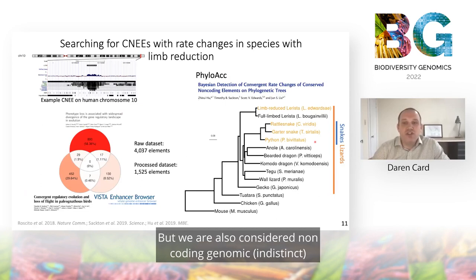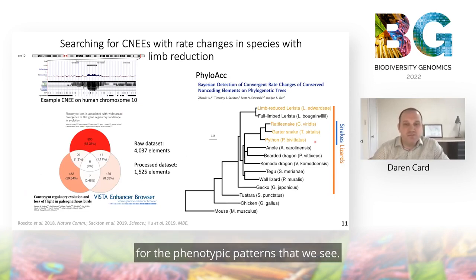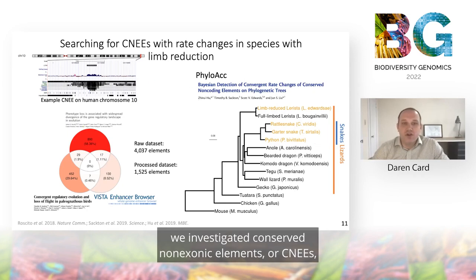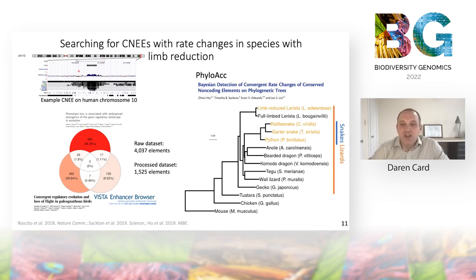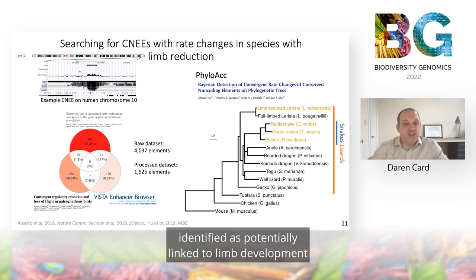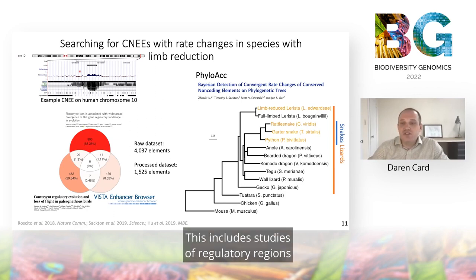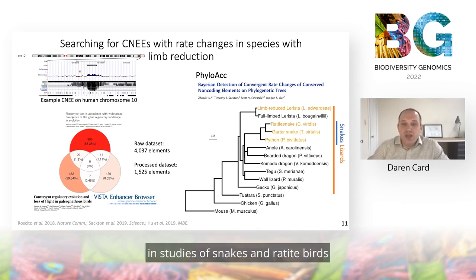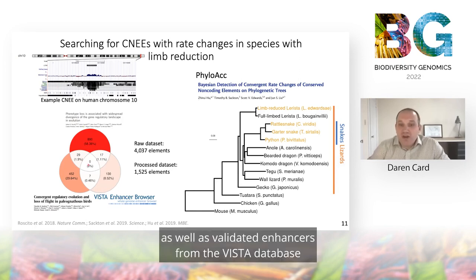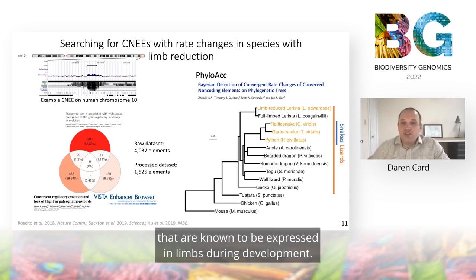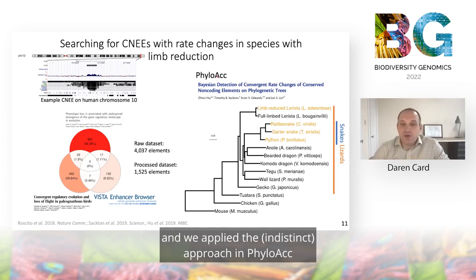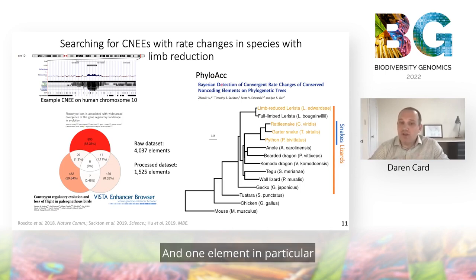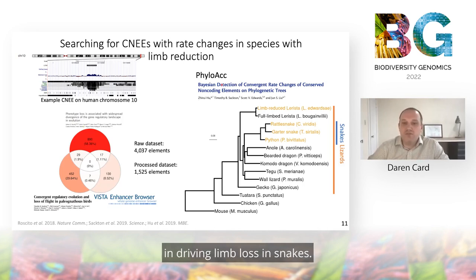We are also considering non-coding genomic loci that could be responsible for the phenotypic patterns we see. Specifically, we investigated conserved non-exonic elements, or CNEEs, which are likely regulatory regions of the genome that control gene expression of nearby genes. We gathered roughly 4,000 CNEEs identified as potentially linked to limb development in previous investigations, including regulatory regions associated with limb reduction in snakes and ratsnake birds, as well as validated enhancers from the VISTA database expressed in limbs during development. These elements were identified using BLAST, and we applied the Bayesian approach in PhyloACC to detect evolutionary rate shifts. One element we were especially interested in was the ZRS enhancer, previously implicated in driving limb loss in snakes.